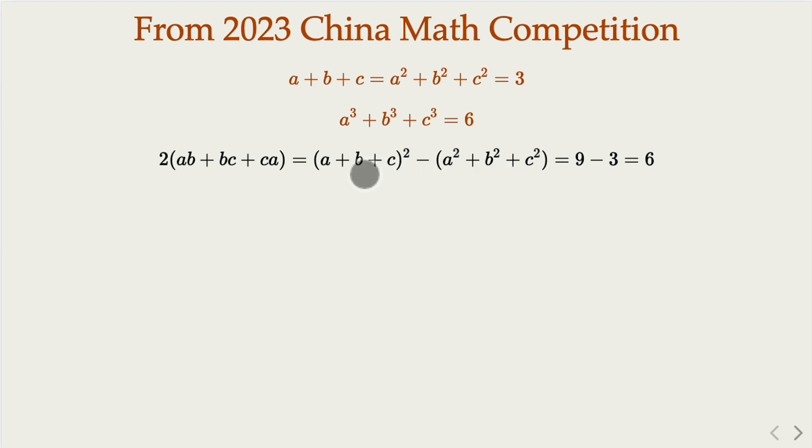Now, let's plug in the numbers. We're going to have 3 squared minus 3, that would equal to 6. And of course, AB plus BC plus CA is equal to 3.